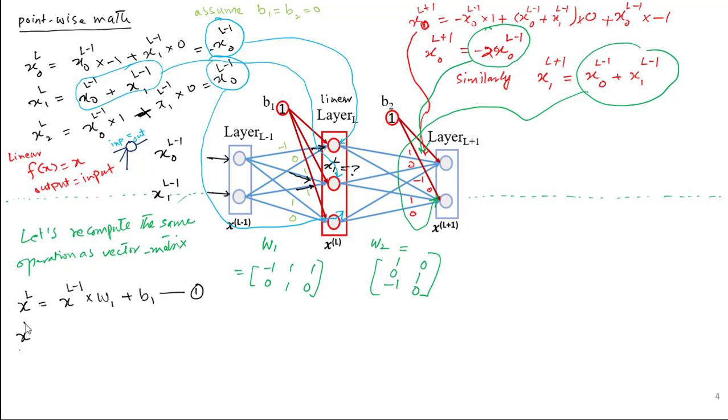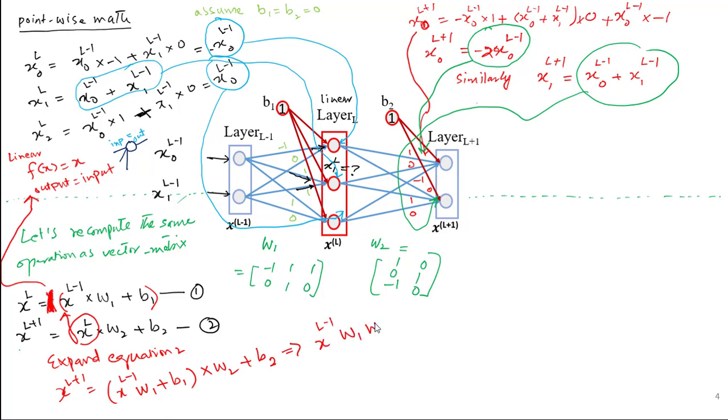We have two equations. The activation at layer L is dependent on the activations at layer L minus 1 multiplied by W1 plus b1. And the activations at L plus 1 is dependent on the previous layer which is XL times W2 plus b2, which is the bias vector. Now let's expand equation 2. Importantly we have f in equation 1 which is the activation function. But as we discussed, the activation function in layer L is linear, which means the output and input are same. So this can be replaced with one or an identity element. Let's expand equation 2. Equation 2 contains XL which is represented by equation 1. So if we replace XL by the contents of equation 1 and expand this equation further.